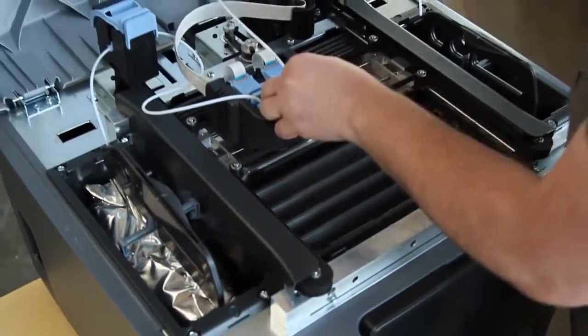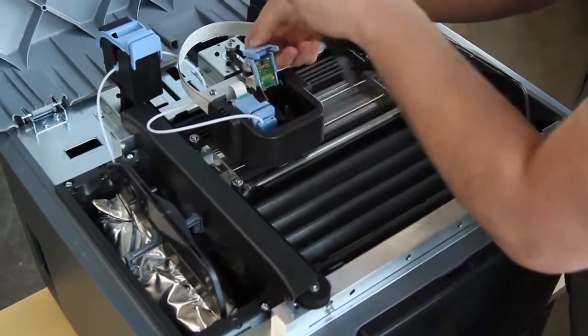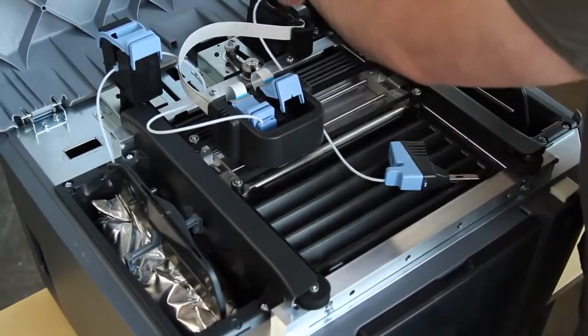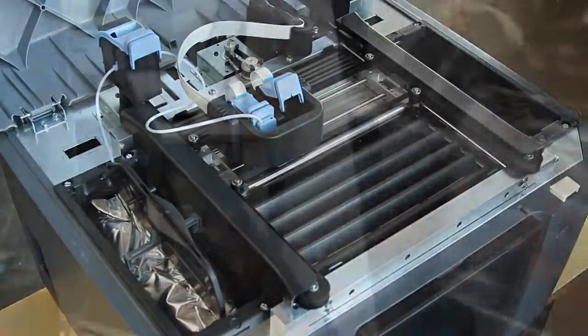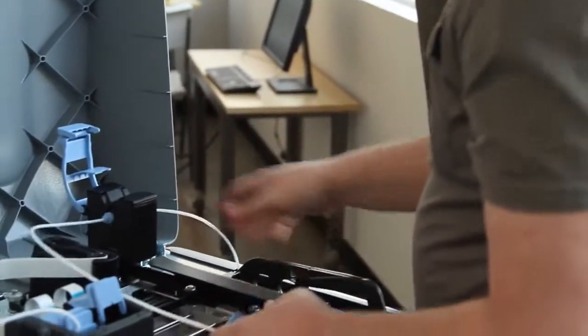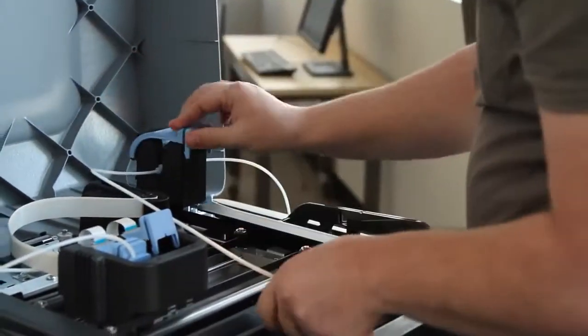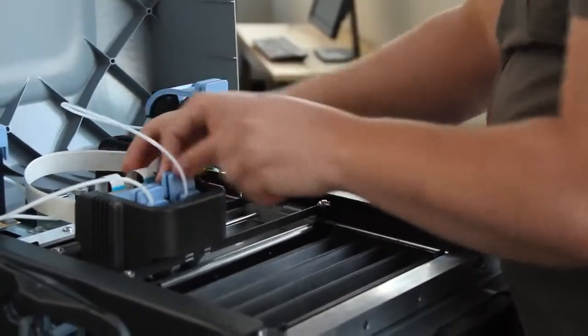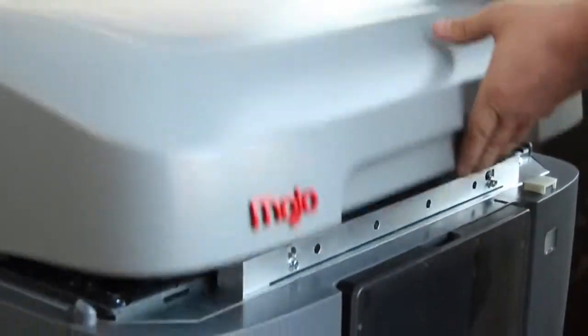Mojo uses our new QuickPak print engine with a snap-in printhead that's as simple to use and quick to change as an inkjet cartridge. And each spool has 80 cubic inches of material, so you'll be changing material cartridges less often and you'll have more uninterrupted printing.